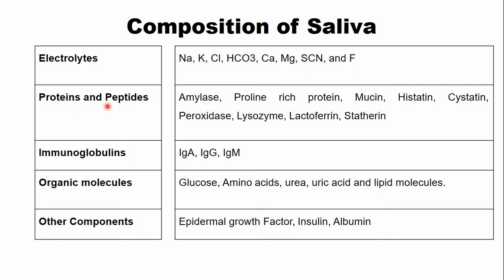There are proteins and peptides such as amylase, proline-rich protein, mucins, histatin, cystatin, and statherin. These are the various proteins present in human saliva. Immunoglobulin IgA, which is a secretory immunoglobulin, is the main immunoglobulin present in human saliva.